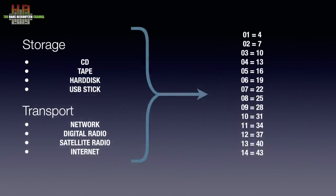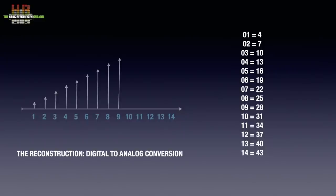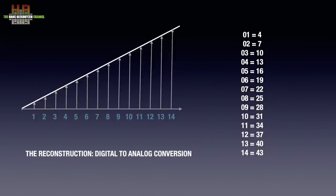On playback the table is read and then rendered in discrete voltages. This would have resulted in a staircase pattern if not for the reconstruction filter that slows down this signal so the original straight line is regained, if all went well.